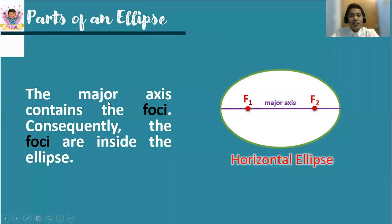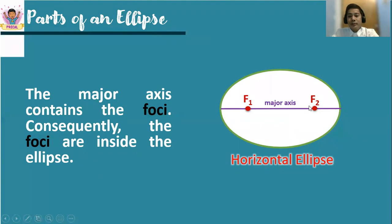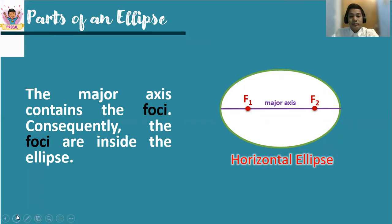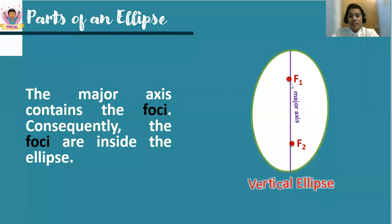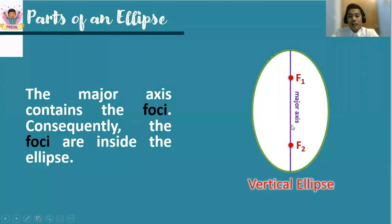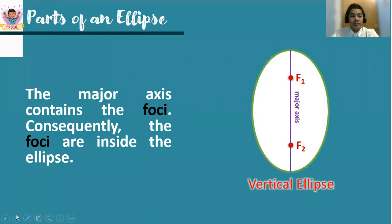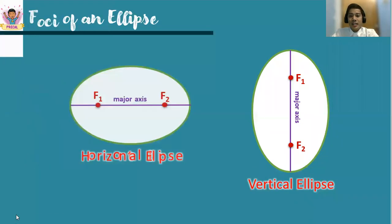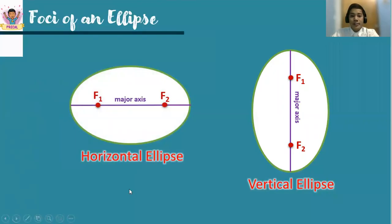The major axis contains the foci; consequently, the foci are inside the ellipse. The focal points are what we know as the foci, and we name them F1 and F2. For the vertical ellipse, they will just move along this major axis — it is always the major axis that contains the focal points or the foci.